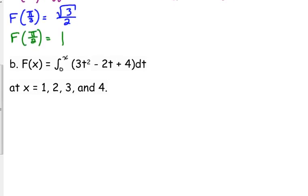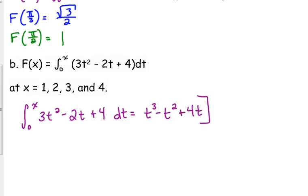Instead of anti-differentiating this and plugging in the limits one, two, three, and four, let's anti-differentiate from zero to X of three T squared minus two T plus four with respect to T. And that gives us, what, T cubed minus T squared plus four T from zero to X.